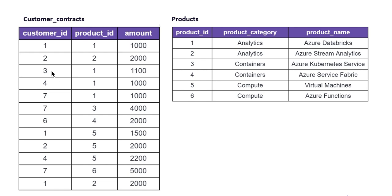For customer ID 3, there is only one product purchased — product ID 1 — so this will also be eliminated and not appear in our output. For customer ID 4, they purchased product ID 1 and product ID 5, but again no product from the Containers category, so it's also excluded.